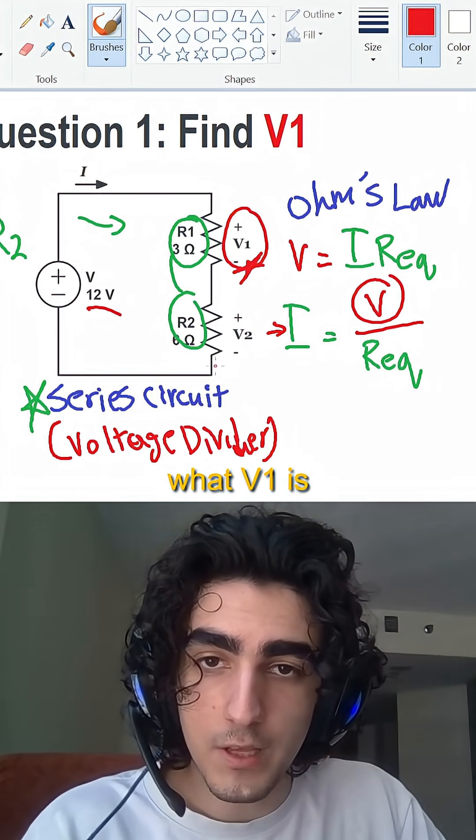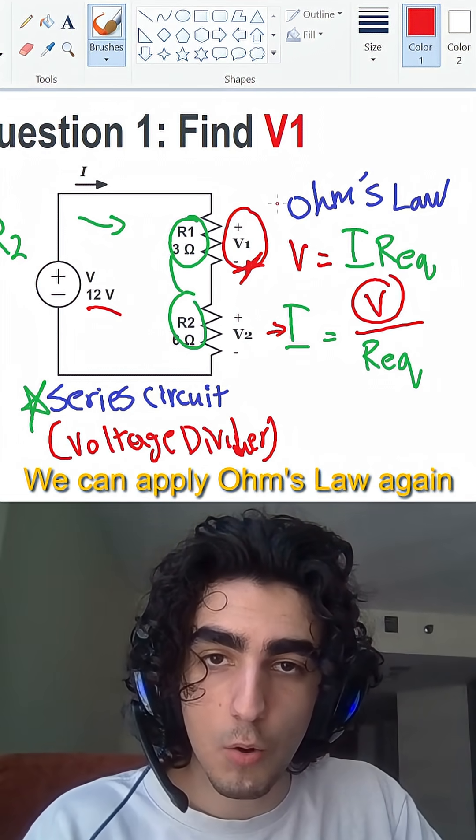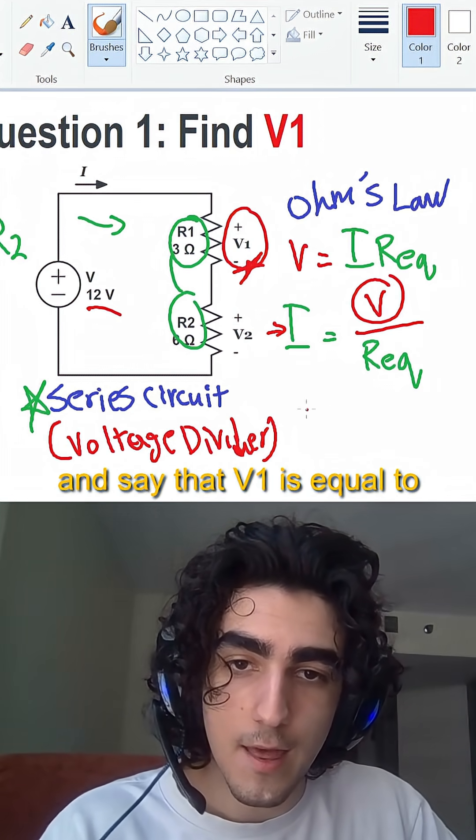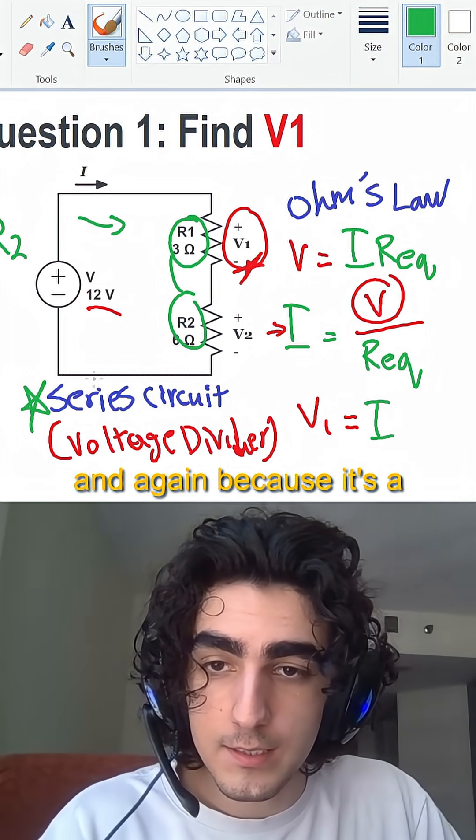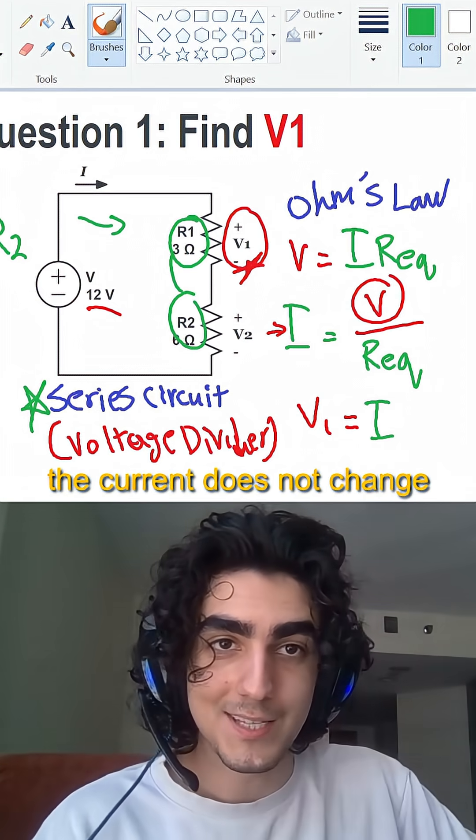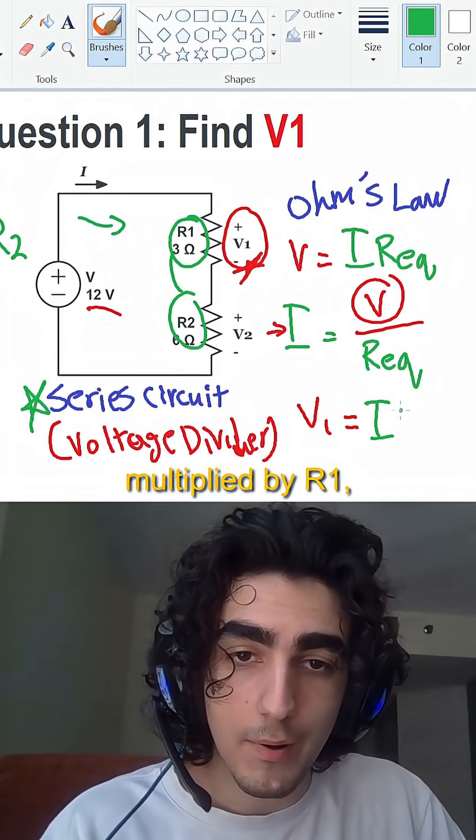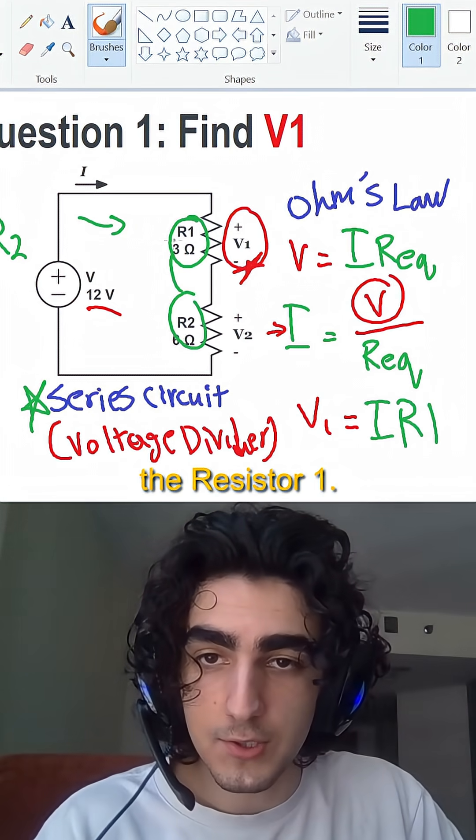And now to actually find what V1 is, we can apply Ohm's Law again, and say that V1 is equal to the current, and again, because it's a series circuit, the current does not change, multiplied by R1, the resistor one.